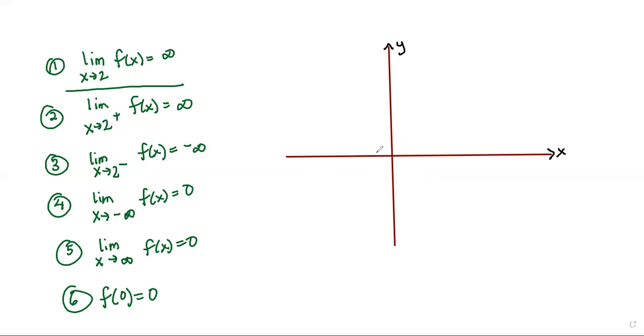We need f of zero to be zero. So I'll draw a nice dot at zero, zero. So that one's done.